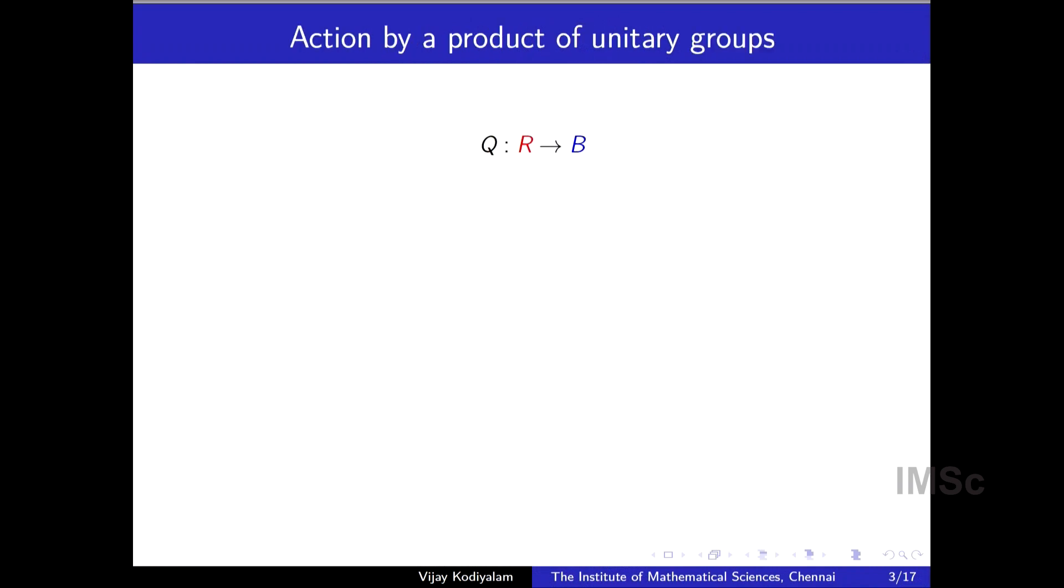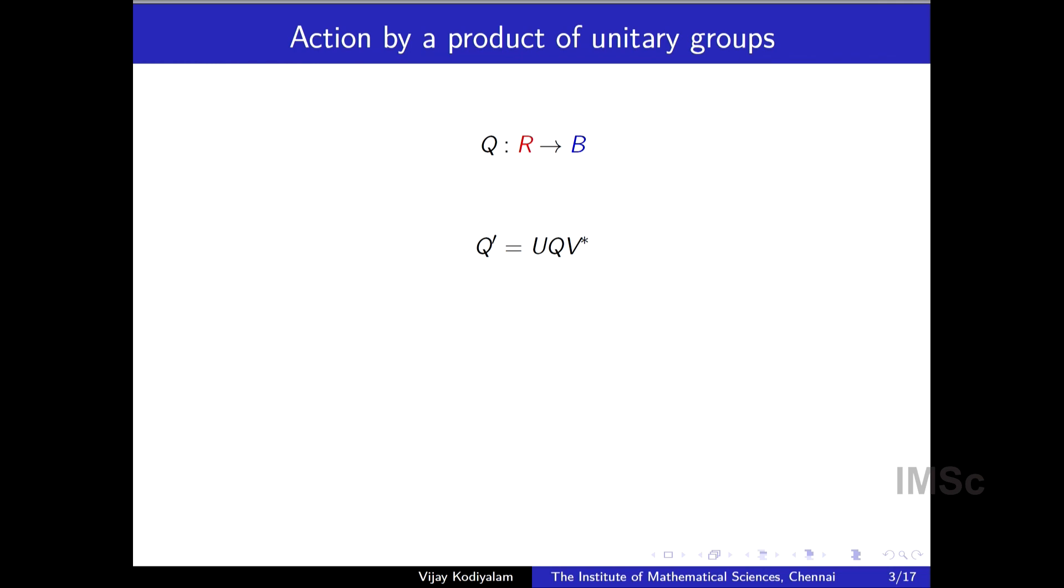Let me begin with this first example. So let Q be an operator from R to B. R and B are vector spaces, typically complex vector spaces endowed with an inner product. So finite dimensional Hilbert spaces basically. And Q is a linear transformation from R to B. And we want to see what happens when you modify Q by applying symmetries of this vector space on either side. So U is a symmetry of B. That means U is a unitary matrix of size, whatever the dimension of B is. And V is a unitary matrix of whatever the size of R is. And you want to see Q dash is U Q V star.